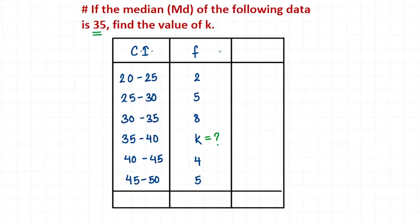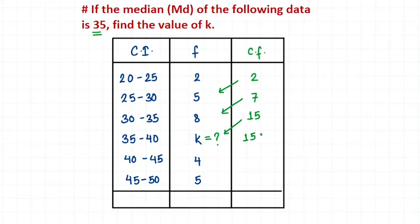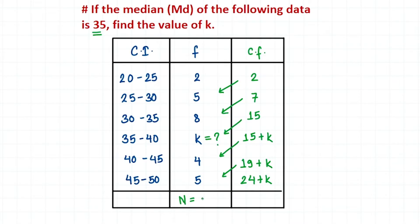The first step whenever there is a question related to median is to find the cumulative frequency (CF). For the first value you just copy the frequency, which is 2. For the second one you add 2 and 5 to get 7. Then add 7 and 8 to get 15. Then 15 plus k, then 19 plus k, then 24 plus k. So n, the total number of items, is 24 plus k.